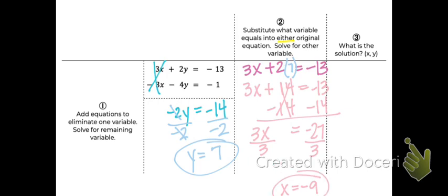So I found out that x is negative 9 and y is 7. And you can write it like a coordinate like this.